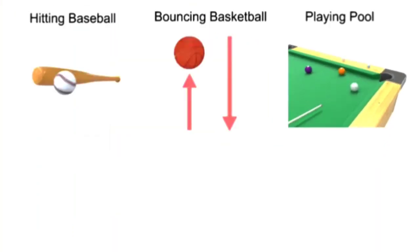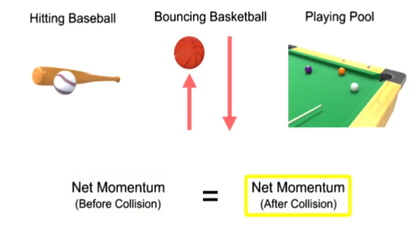When objects collide in the absence of external forces, they form a system in which the net momentum of both objects before the collision equals the net momentum of both objects after the collision.